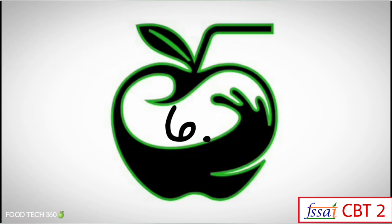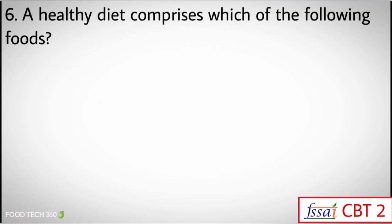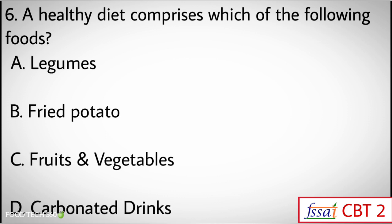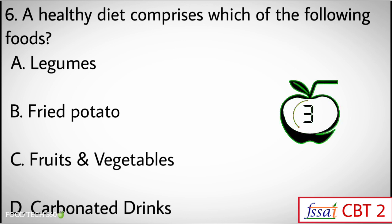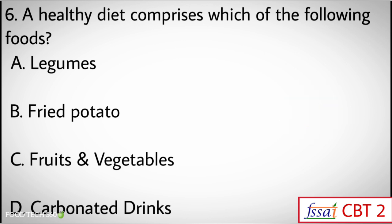Question number 6: A healthy diet comprises which of the following foods? Options: A) Legumes, B) Fried Potatoes, C) Fruits and Vegetables, D) Carbonated drinks. Correct answers: A) Legumes and C) Fruits and Vegetables.